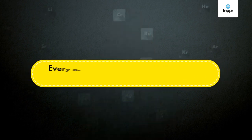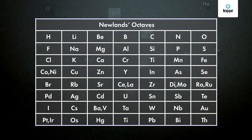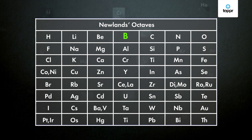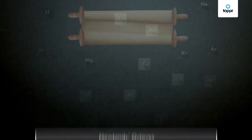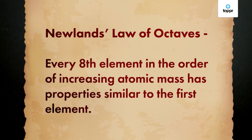This is exactly what Newlands observed — every eighth element has properties similar to the first one. For example, lithium has properties similar to sodium, which is the eighth element after lithium. Similarly, boron and aluminium share similar properties. This became the basis for what he called the law of octaves.